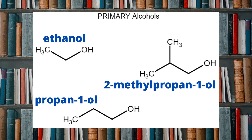Before we jump into the reactions we're going to need to know the difference between primary, secondary and tertiary alcohols. A classic example of a primary alcohol is ethanol. Ethanol is an example of a primary alcohol because the carbon that is directly bonded to the oxygen of the OH group is itself only bonded to one other carbon atom directly.